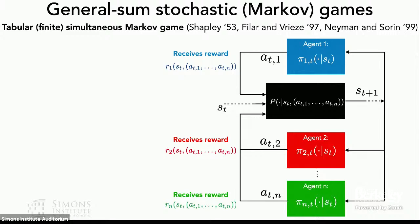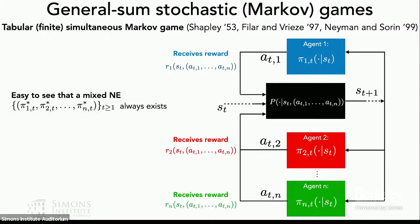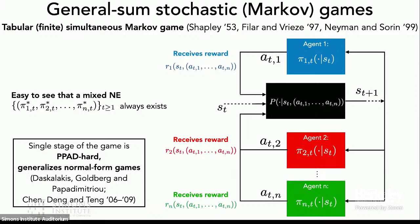We're describing stochastic games in one of the simplest possible settings, which is the tabular setting, with a finite state and finite action space, considering a general sum environment. This strictly generalizes the single agent MDP, in the sense that now we have multiple agents — agent one to n — who can all take a simultaneous action at a given round. This joint sequence of actions dictates both the instantaneous rewards admitted to each agent and the probability transition from s_t to s_{t+1}. A mixed Nash equilibrium of some type will always exist, and this stochastic game model strictly generalizes the set of all normal form games. As a consequence, these general sum stochastic games are in fact PPAD hard.